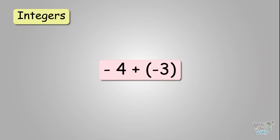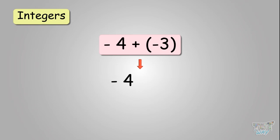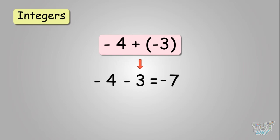Next: negative four plus negative three. You have brackets here, so open them up. You get negative four minus three, because a positive sign and a negative sign becomes subtraction. Now we have two negative signs, so you will be adding. The answer will be minus seven, so negative four minus three equals negative seven.